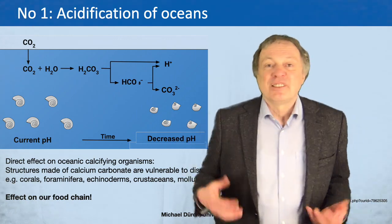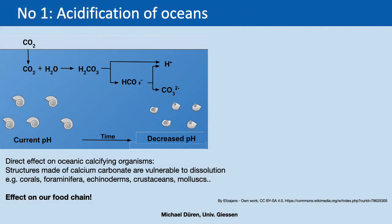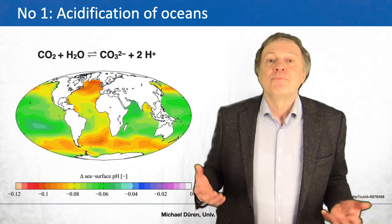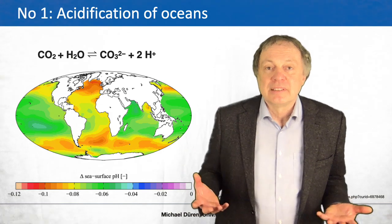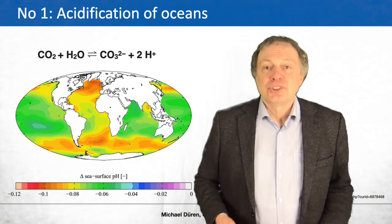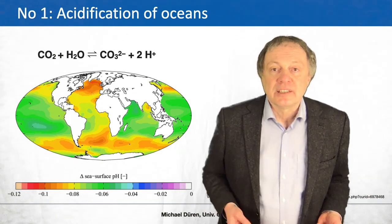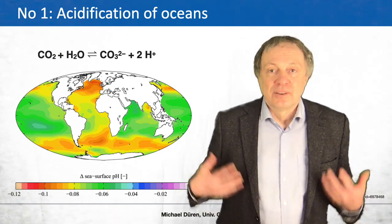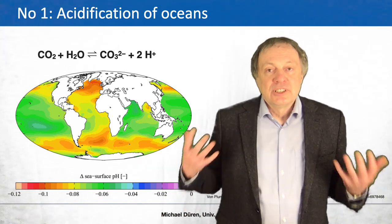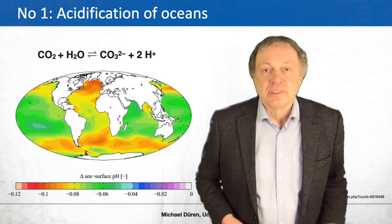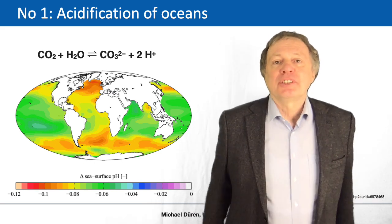Some examples of those animals are corals, foraminifera, echinoderms, crustaceans, mollusks, and so on. All of them are basic animals in the sea which are the start of the food chain for other animals. Therefore the acidification can have a big effect on our future food chain, which takes its beginning in the oceans.